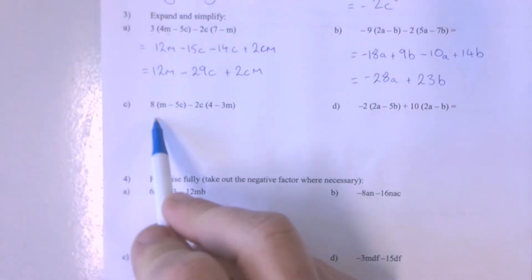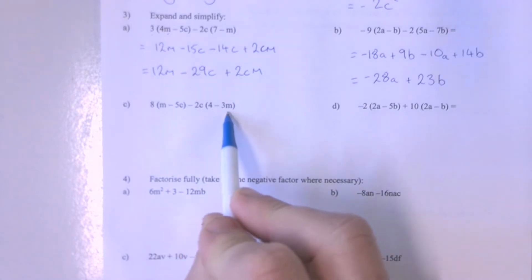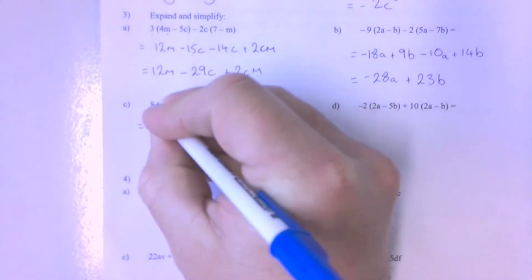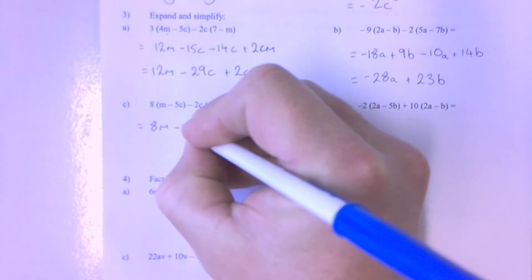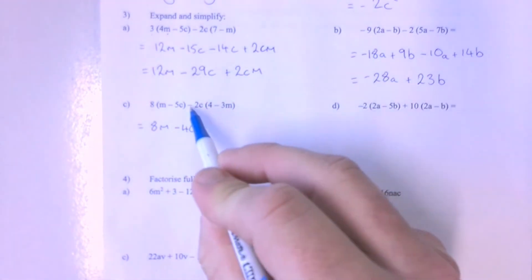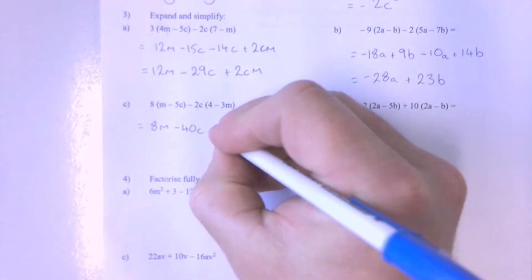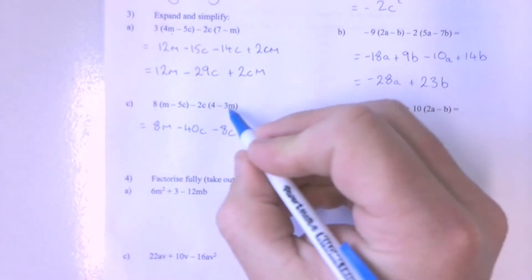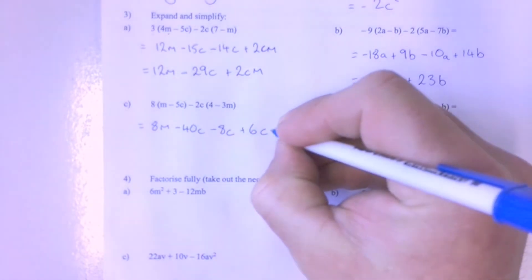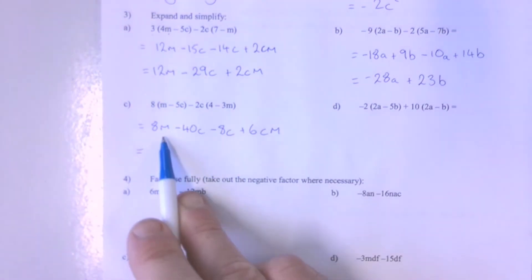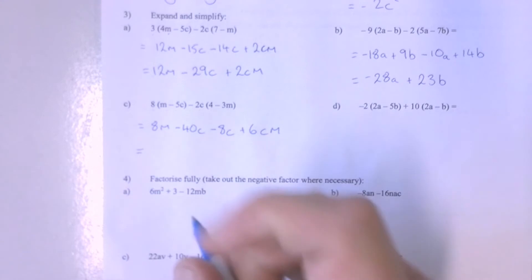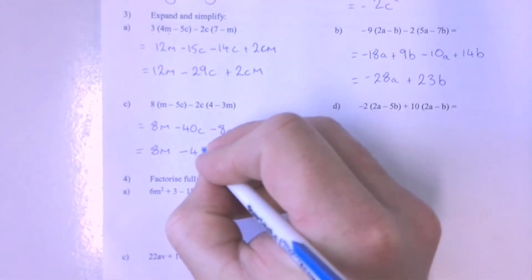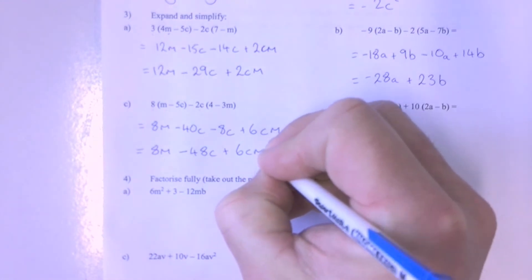In question 3C, I'm going to expand my brackets and then collect my like terms to simplify. I've got 8 groups of M, 8 times negative 5 groups of C making minus 40C. I've got negative 2Cs multiplied by 4 making minus 8Cs. And I've got negative 2Cs times negative 3M — negative 2 times negative 3 makes positive 6CMs. Collecting like terms: 8M stays, then minus 40 minus 8 gives minus 48 groups of C, and 6 groups of CM on the end.